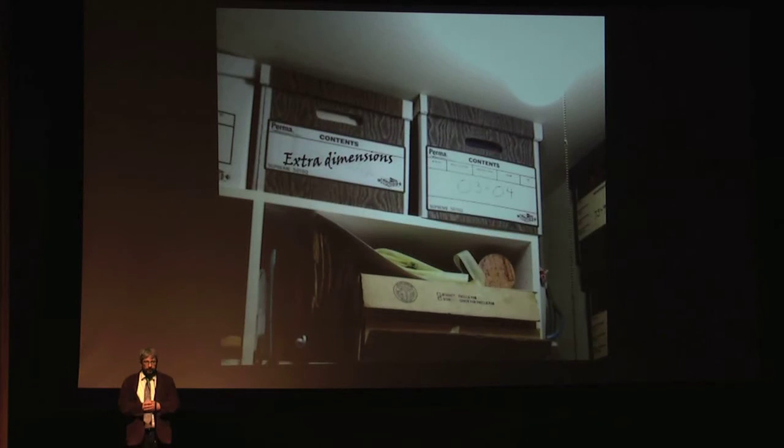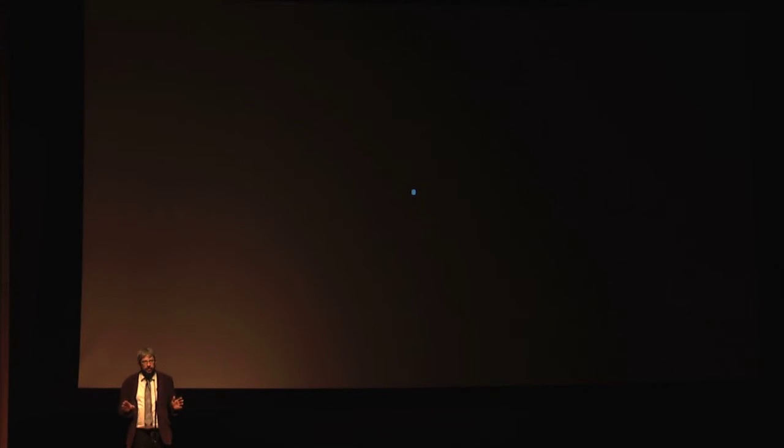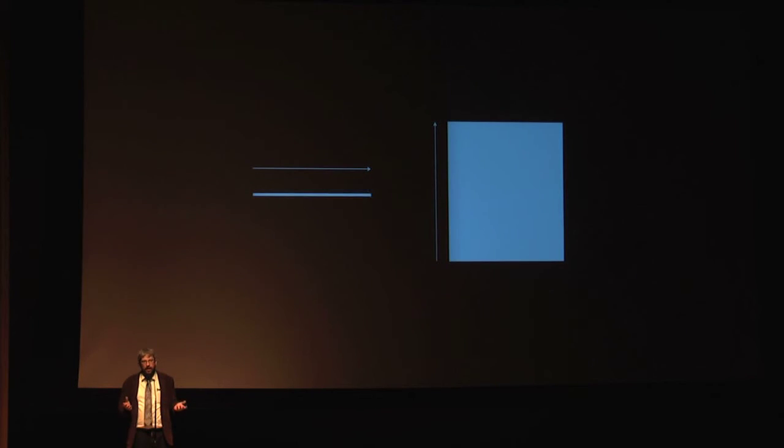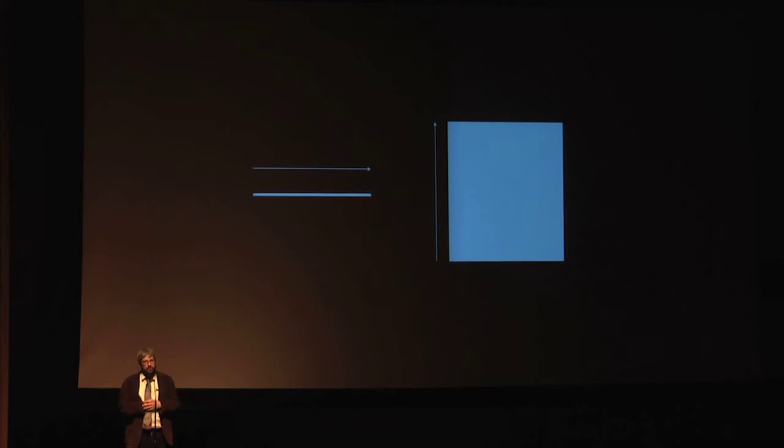Let me get to the point. For the sake of this presentation, I want you to assume that this point has zero dimensions — no height, no width. Obviously, if it had no height or width, you wouldn't even be able to see it. So for the sake of this presentation, that is zero dimensions. If you extend that point out into a line, you have one dimension. And then if you extend it again, perpendicular to that line out into a plane, you have two dimensions.